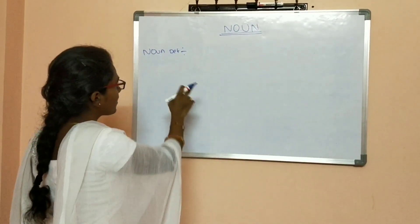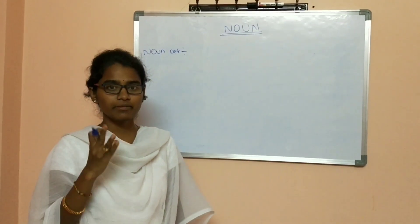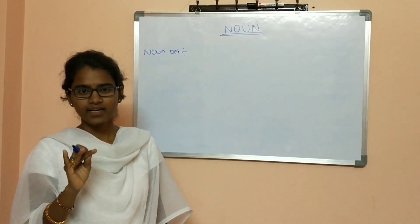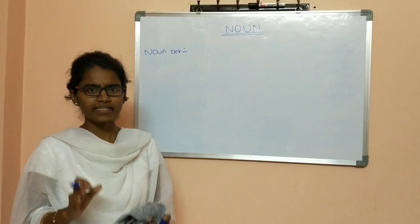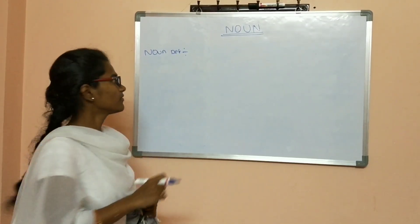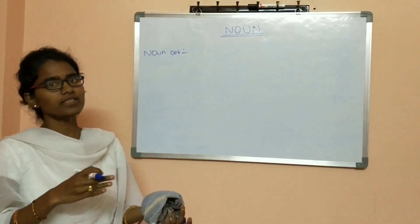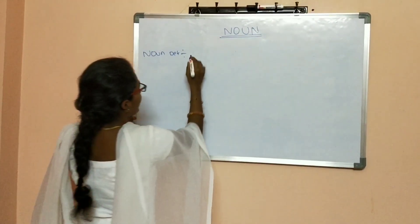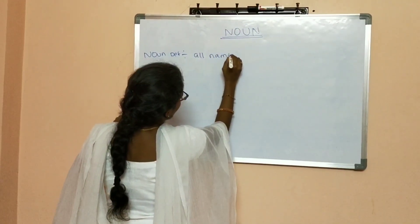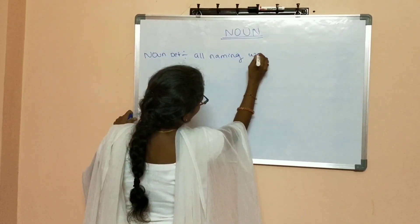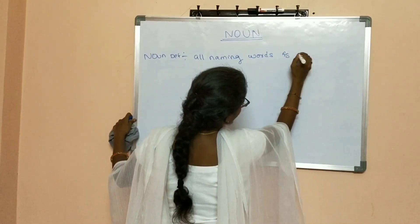Noun definition: a noun is used as the name of a person, thing, or place. It is called a noun, or simply, all naming words are called a noun. So if you want a very simple definition — a noun is a naming word.